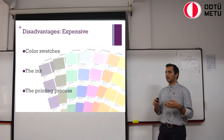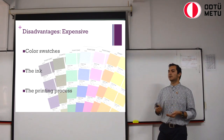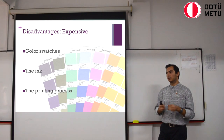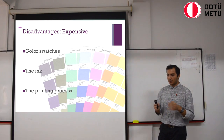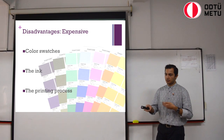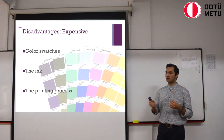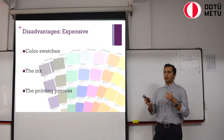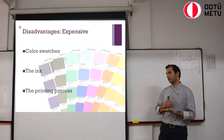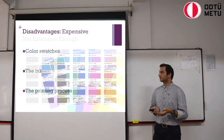And secondly, because the inks are predefined and pre-decided for you, you can't really opt for a cheap alternative. So you have to use the ink that Pantone dictates you to use. And thirdly, the printing process is really hard — harder compared to CMYK because you have to go layer by layer. It is basically a nightmare for printers.